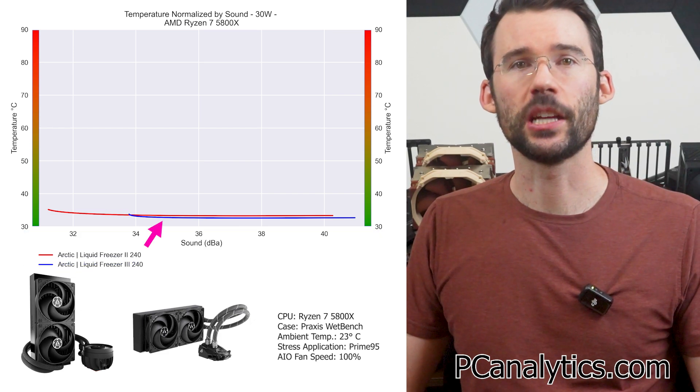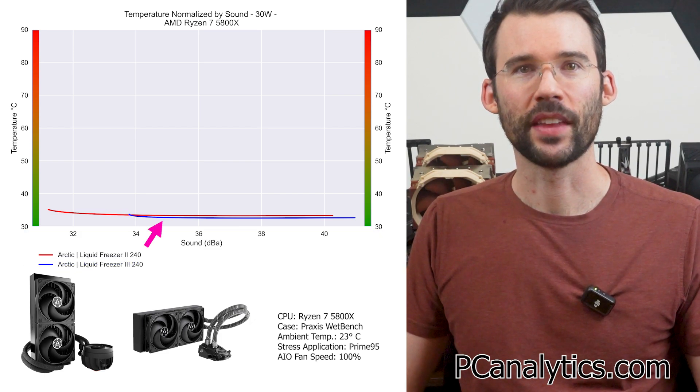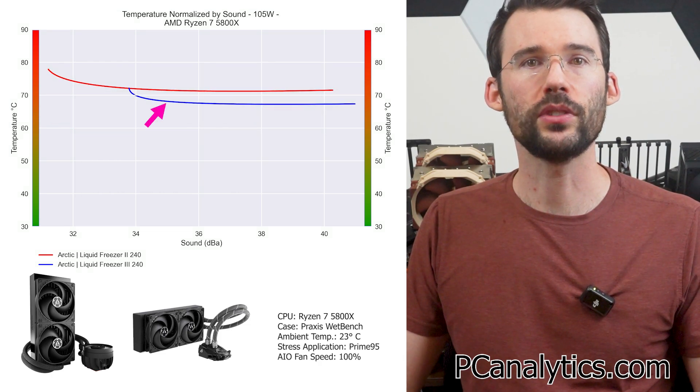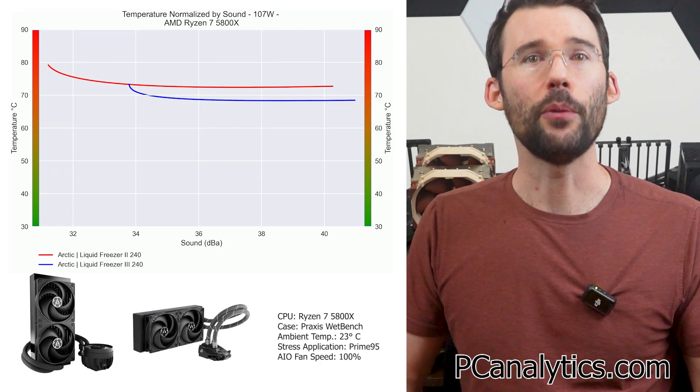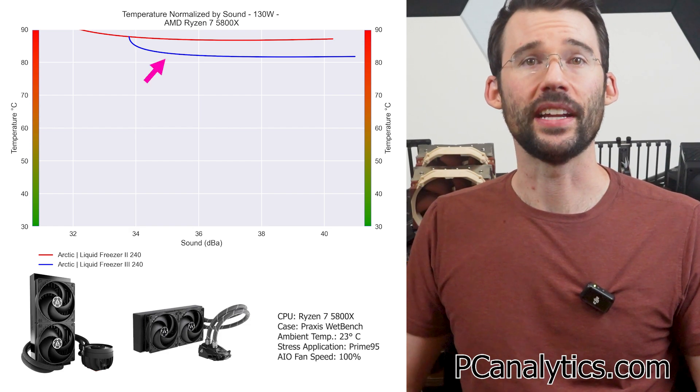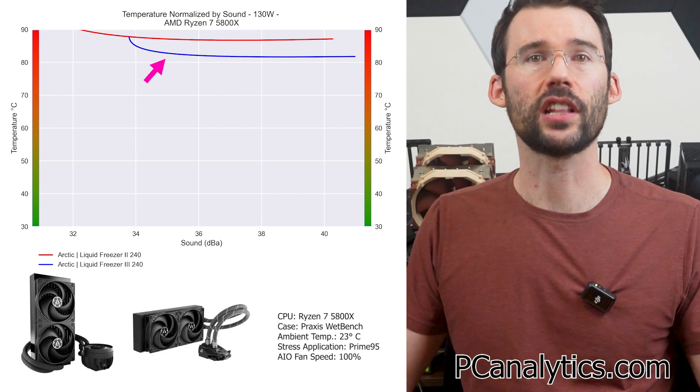At idle, both coolers have similar performance for a given noise level. As we increase the wattage to 105, we can see that the Liquid Freezer 3 pulls ahead at comparable noise levels. And when we push the CPU to 130 watts, we can see that the Arctic Liquid Freezer 3 continues to show improvement over the Arctic Liquid Freezer 2.